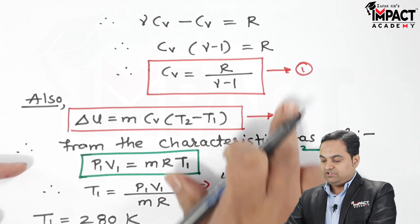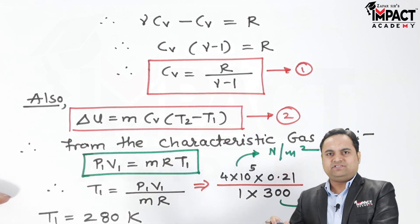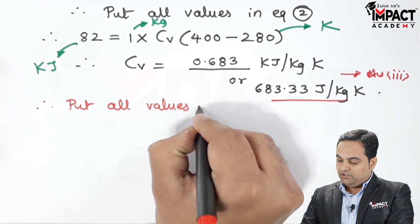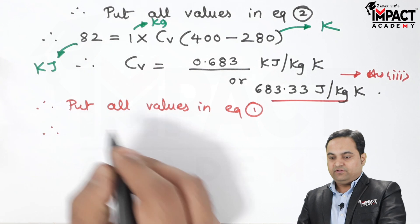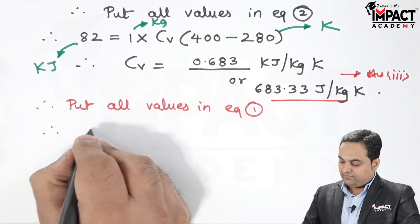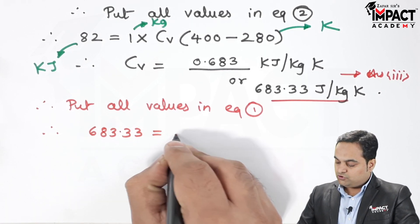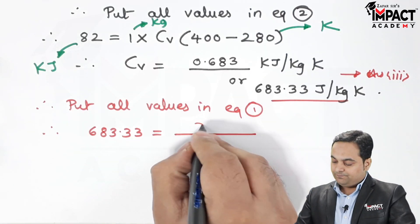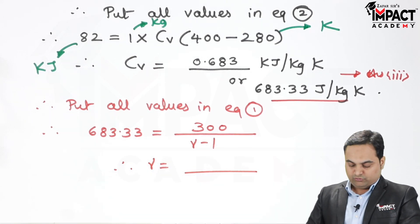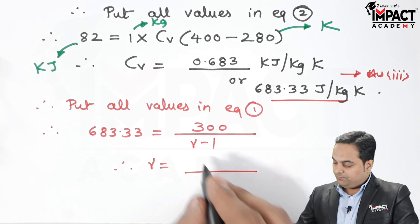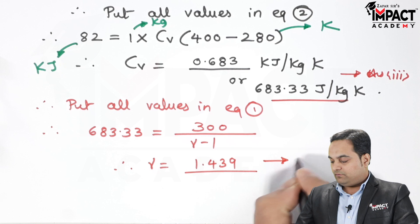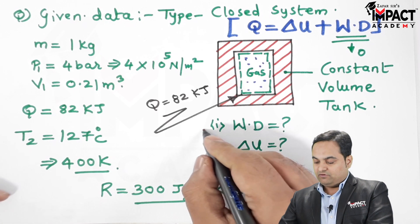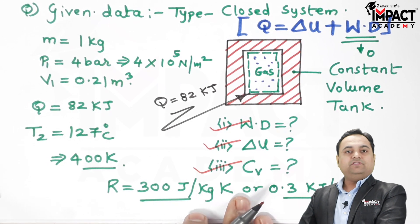As an extra part not asked in the question, I can find γ by substituting into Cv = R / (γ − 1). Using Cv = 683.33 J/kg·K and R = 300 J/kg·K, γ works out to approximately 1.44. So all three required answers — work done, change in internal energy, and Cv — have been found and the problem is complete.